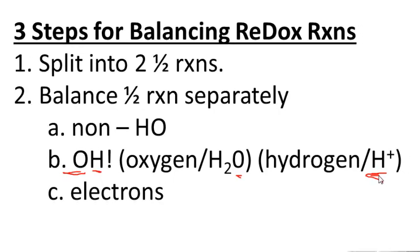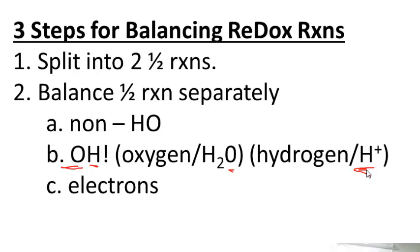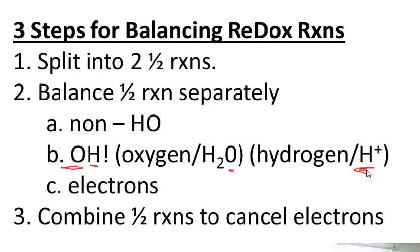Step three is to combine the two balanced half-reactions in such a way that electrons cancel. That means you may need to multiply one or both reactions by a number to get a common number of electrons, because the electrons lost by one reaction must equal the electrons gained by the other — electrons are transferred in a redox reaction.